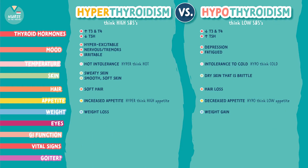Let's compare the eyes. In hyperthyroidism we see something called exophthalmos — bulging eyes due to fluid accumulation behind the eyes. A memory trick for this is: think excess thyroid for exophthalmos. In hypothyroidism we have more generalized puffiness and edema around the eyes and face, which is called myxedema.